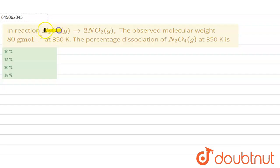The reaction is given as N₂O₄ goes to 2NO₂, and it says that the observed molecular weight is 80 grams per mole at 350 Kelvin. Now we have to find out the percentage dissociation of N₂O₄. So let's see how this question will be solved.